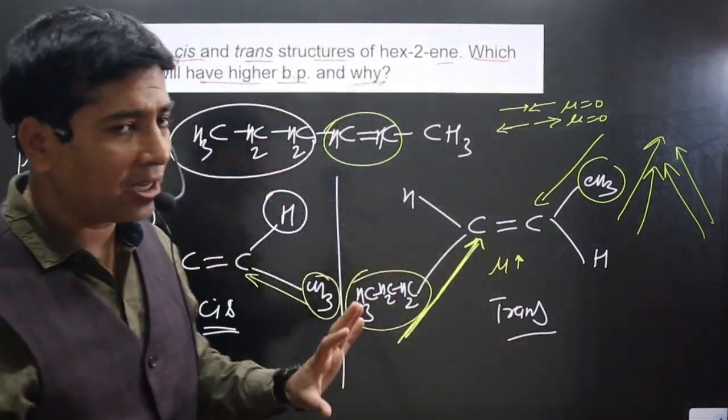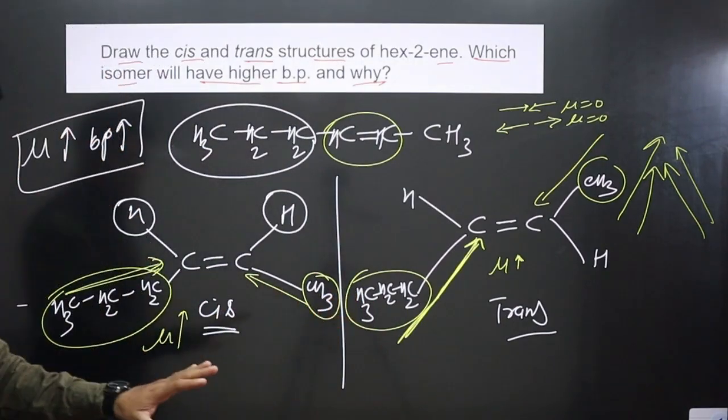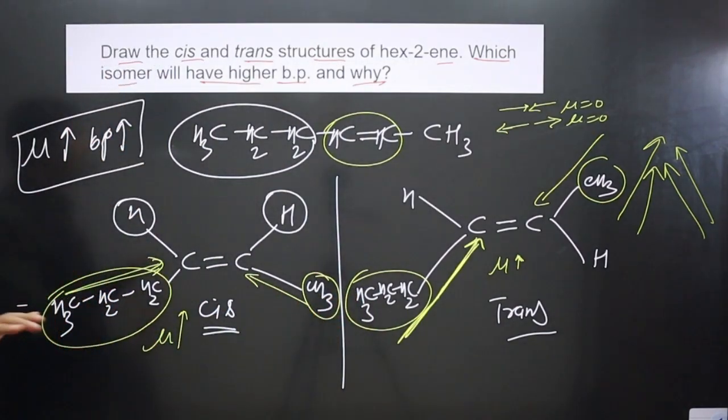So to conclude: the cis form will have the higher boiling point because it has the higher dipole moment and higher polarity, while the trans form has a lower boiling point. If you liked this video, please share and subscribe to the channel.